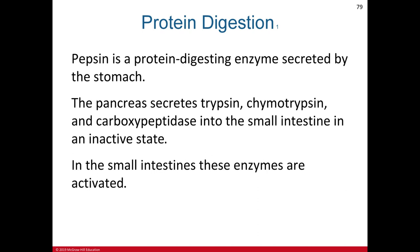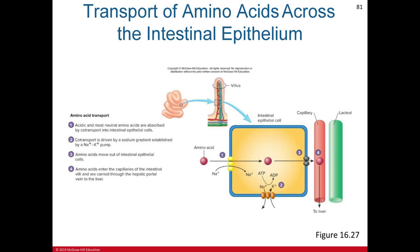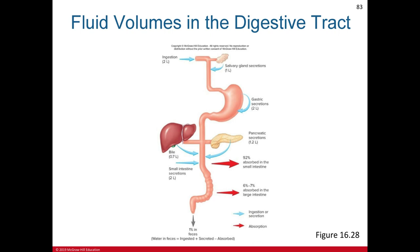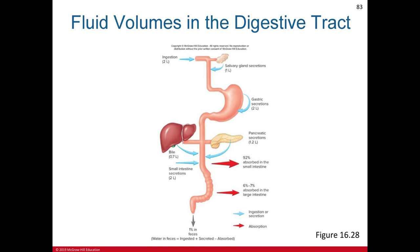For protein digestion, pepsin is a protein-digesting enzyme secreted by the stomach. The pancreas secretes trypsin, chymotrypsin, and carboxypeptidase — the three major protein-digesting enzymes of the exocrine pancreas — into the small intestine in an inactive state, where they are then activated. They also neutralize the acidic chyme from the stomach. Water and minerals can move across the intestinal wall in either direction depending on osmotic pressure; 99% of water entering the intestine is absorbed, and minerals are actively transported across the wall of the small intestine.